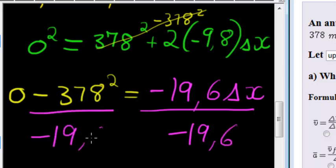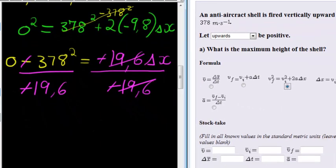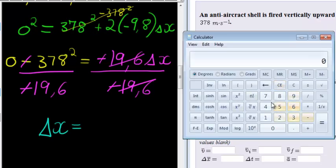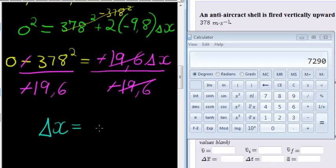And that's where we get rid of these negatives, which I'm sure you hate as much as I do. So on the right hand side I have left over change in x. On the left hand side, I'm going to solve that using the calculator. And I get an answer of 7,290 meters. And that's our answer. Let's go put it in.